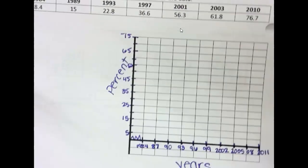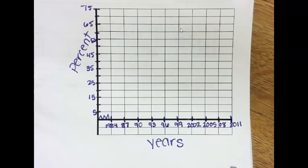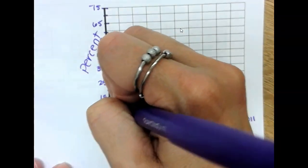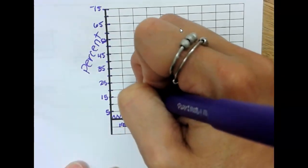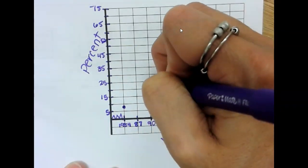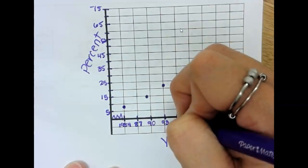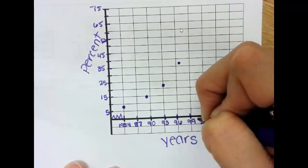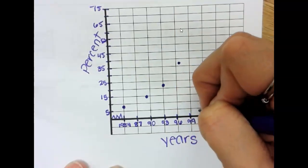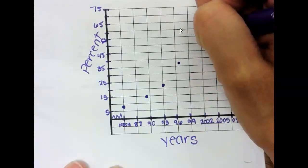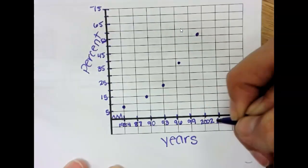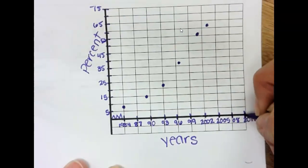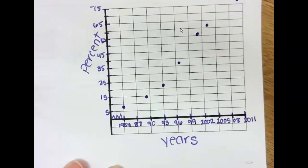And then you'll plot your points. So, when graphing from a blank table, you have to make sure you label everything. So, in 84, it's at 8.4. In 89, it's at 15. In 93, 22.8. In 97, at 36.6. In 2001, 56.3. In 2003, by 61.8. And by 2010, 76.7.